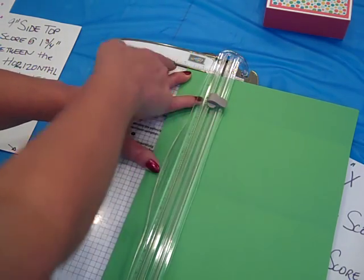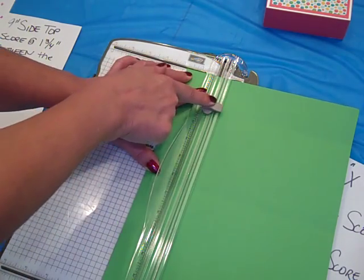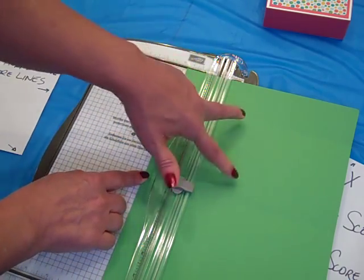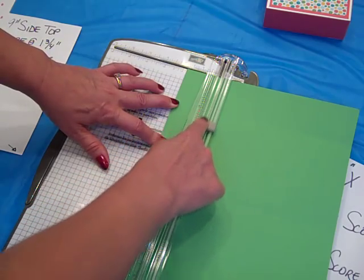Because obviously we don't want to cut this, we just want to score it. And we're going to line it up at the 1¾ inch mark and we're going to score and stop. So again we just want to score between these two marks and I like going over it maybe just a couple of times.